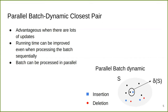For parallel batch dynamic closest pair, compared with just dynamic closest pair, there are many advantages. First, it is advantageous when there are a lot of updates, because the runtime can be improved even when processing the batch sequentially. Also, the batch can be processed in parallel to utilize modern multi-core machines.